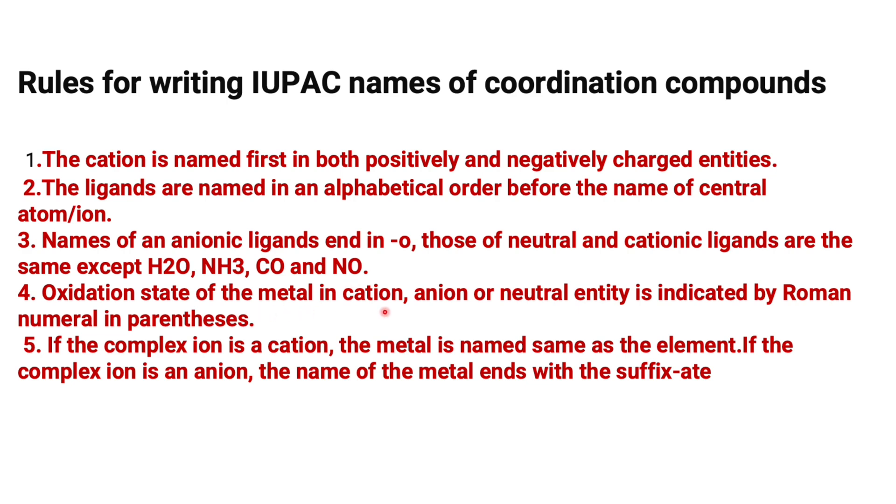Oxidation state of the metal in cation, anion, or neutral entity is indicated by Roman numeral in parentheses. If the complex ion is a cation, the metal is named same as the element. If the complex ion is an anion, the name of the metal ends with the suffix -ate.